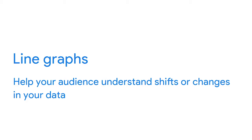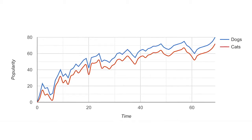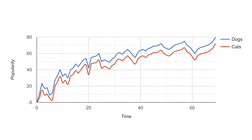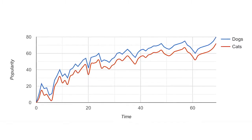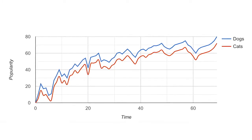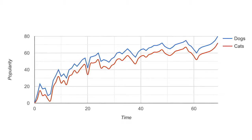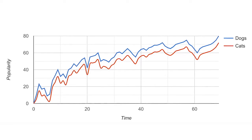Another example is a line graph. Line graphs are a type of visualization that can help your audience understand shifts or changes in your data. They're usually used to track changes through a period of time, but they can be paired with other factors too. In this line graph, we're using two lines to compare the popularity of cats and dogs over a period of time. With two different line colors, we can immediately tell that dogs are more popular than cats. Even as the line moves up and down, there's a general trend upwards, and the line for dogs always stays higher than the line for cats.